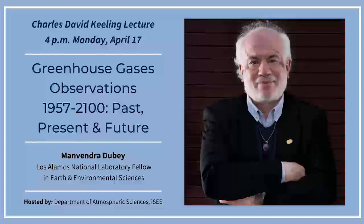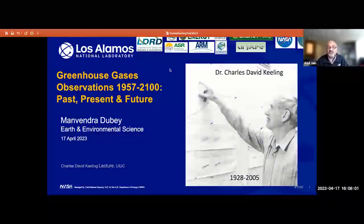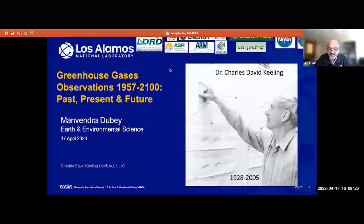Dr. Dubey's work combines measurements of greenhouse gases and aerosols and computer model calculations to improve projections of the carbon cycle, which deals with CO2 and climate change, as well as air quality models for the implementation of decarbonization policies. Dr. Dubey has earned numerous honors and awards, including Los Alamos National Lab Fellow, outstanding research prize, and AAAS, Los Alamos National Lab, and Fulbright Fellowships. He did his PhD at Harvard. Dr. Dubey was a classmate of University of California San Diego's Professor Ralph Keeling, son of Charles Dave Keeling, and actively collaborated with him, as well as with his father, Charles Dave Keeling, on carbon cycle science.